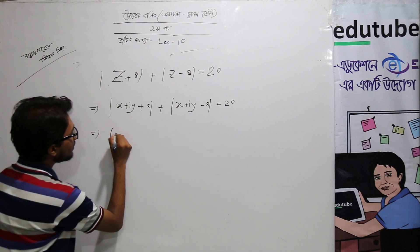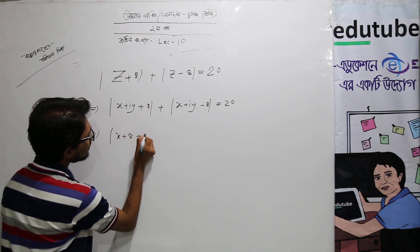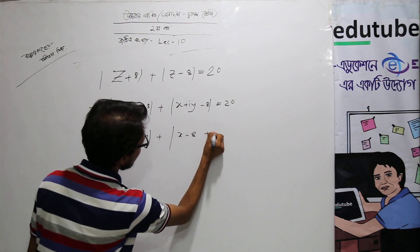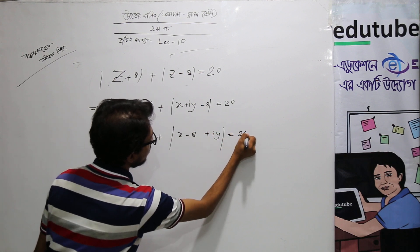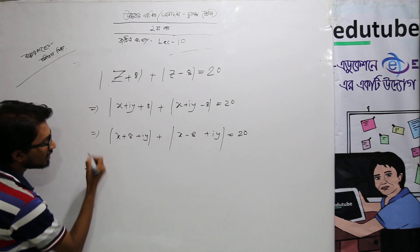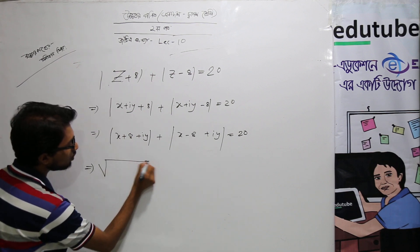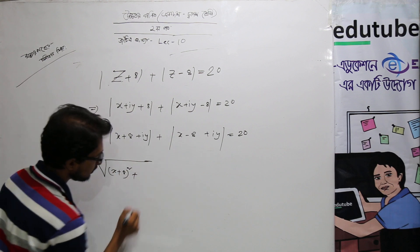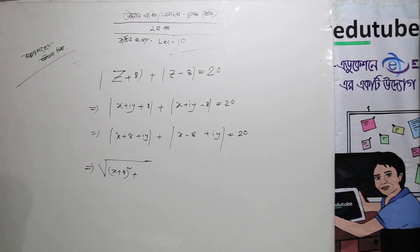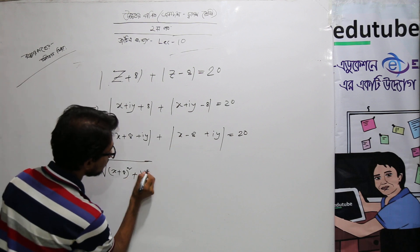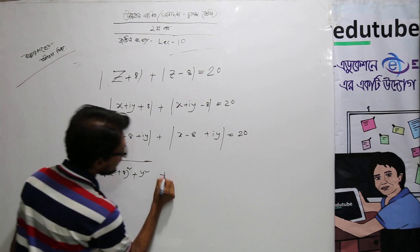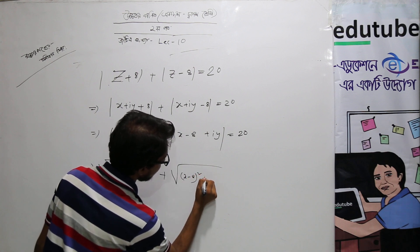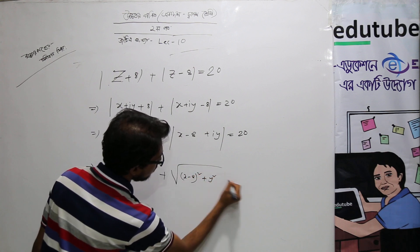Using the corresponding values: |x + 8 + iy| + |x - 8 + iy| equals 20. We combine and write: (x + 8) whole square plus y whole square, plus (x - 8) whole square plus y whole square equals 20.